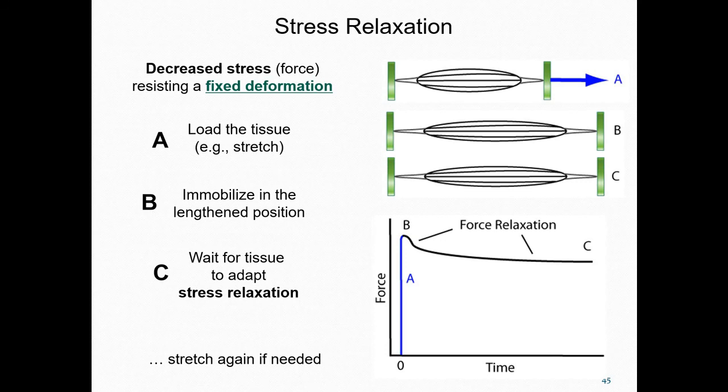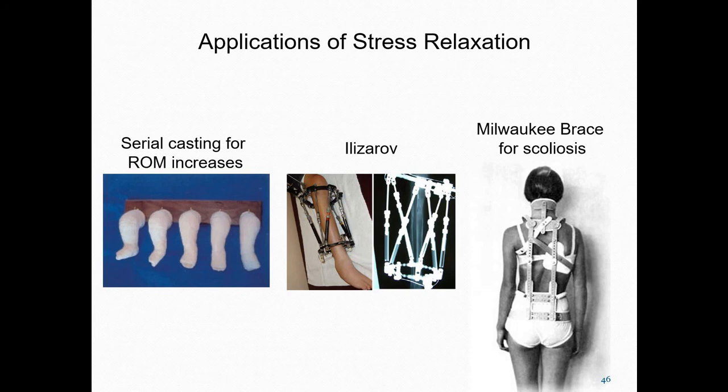In the context of working with tissue therapeutically, after allowing a tissue to relax, the tissue may then be stretched further. Examples of the clinical application of stress relaxation principles include serial casting, ILIZAROV frames, and the Milwaukee brace for scoliosis. Serial casting is the process in which a series of casts are successively used to stretch soft tissues for an extended length of time. An ILIZAROV external fixator is a ring-like brace applied to the outside of the limb and connected through the unbroken part of the bone inside the limb.